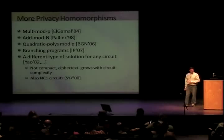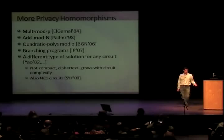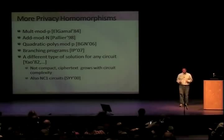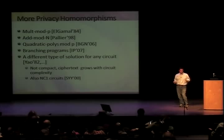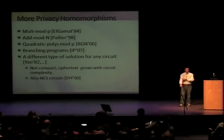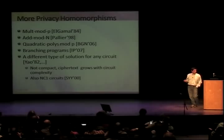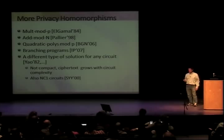There is a different line of solutions, starting from Yao, which also lets you compute on encrypted data, except there the size of the ciphertext does grow. Nonetheless it gives you things the trivial solution doesn't, and there's a variant that does NC1 circuits as well, by Sanders, Jung, and Jung. But these all do not satisfy our requirement for compactness, so we are not going to be doing that.